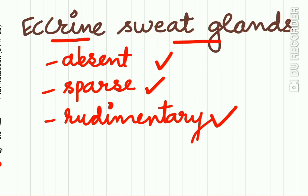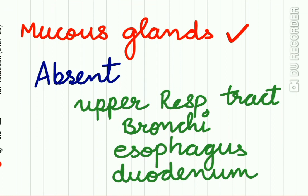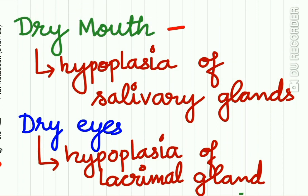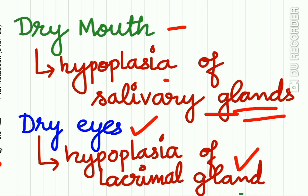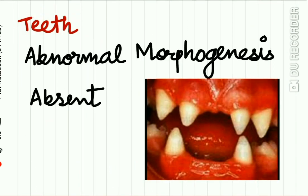The eccrine (sweat) glands are absent, sparse, or rudimentary, so sweating does not occur. The mucous glands may be absent in the upper respiratory tract, bronchi, esophagus, and duodenum. Dry mouth is a frequent feature due to hypoplasia of the salivary glands, and dry eyes occur due to hypoplasia of the lacrimal glands. All glands — sweat glands, salivary glands, and lacrimal glands — are hypoplastic in ectodermal dysplasia.